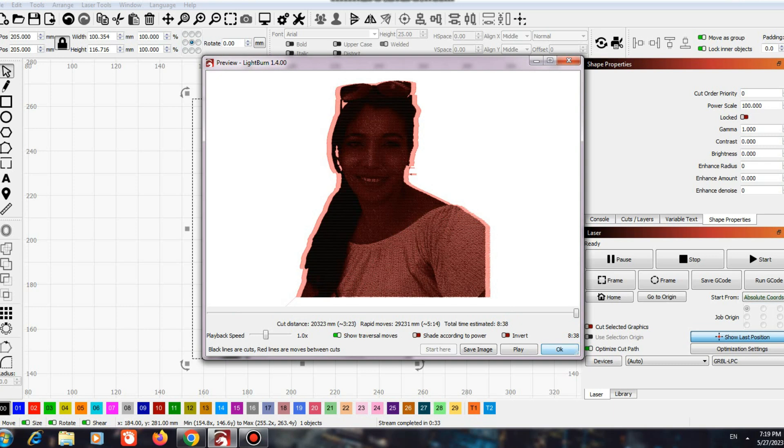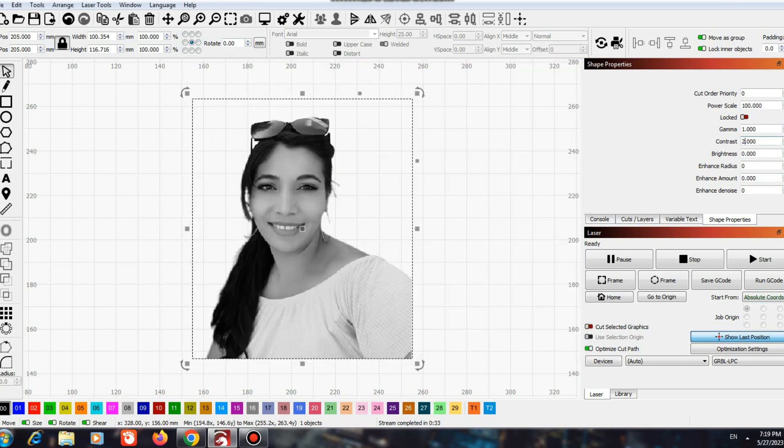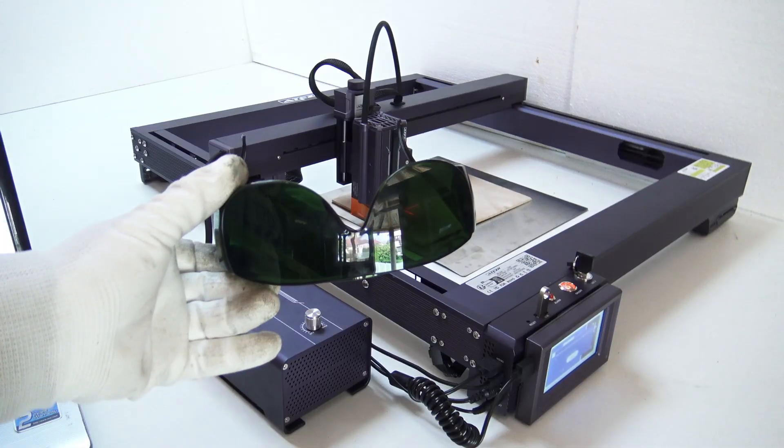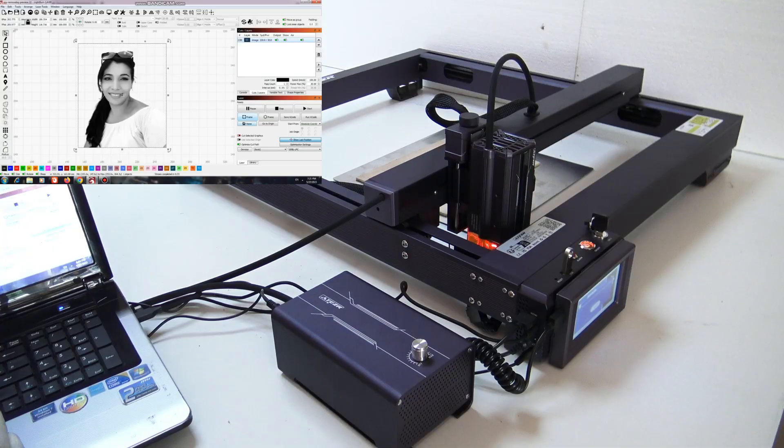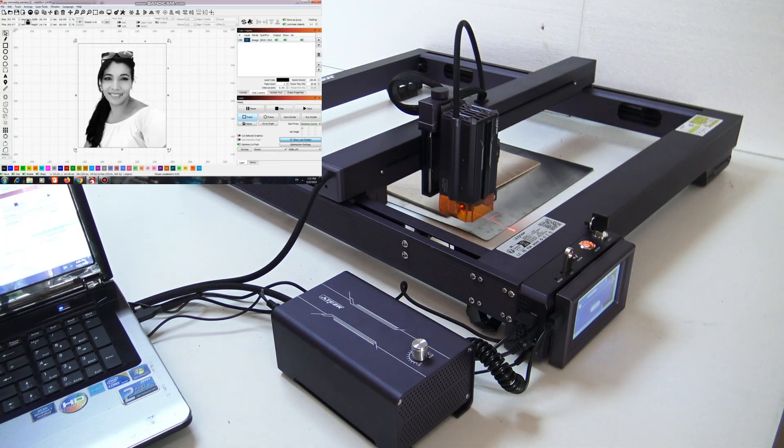The Atezer detects power loss automatically and then resumes exactly where it left off. The accuracy of engraving after power loss, the Atezer can guarantee less than 0.5.